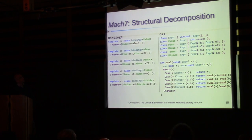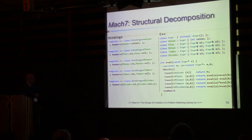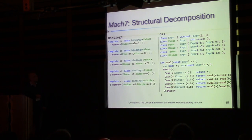The user specializes the library class 'bindings' and says: for class 'value', the first argument that should be bound is this member pointer — which can be a data member pointer or a pointer to a getter. For 'plus', we bind the first argument to operand t1 and the second to operand e2. This only needs to be written once per class hierarchy and can then be used as many times as you want. If your classes are parameterized, the bindings can also be parameterized.